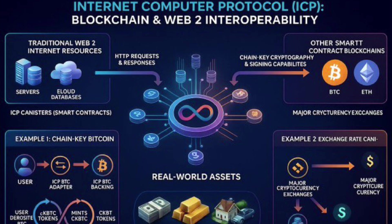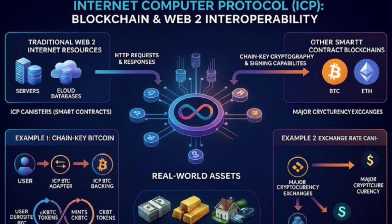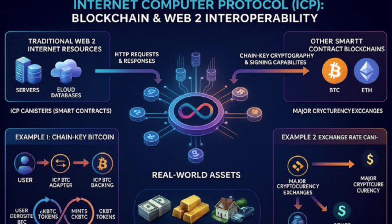This enables real use cases such as ckBTC — chain key Bitcoin — where Bitcoin is held one-to-one and programmatically controlled by ICP canisters, and real-time exchange rate canisters pulling data straight from major exchanges into fully on-chain applications. The result is a single execution layer where DeFi, Web2 services, real-world assets, and cross-chain value flows converge natively — not bolted together.